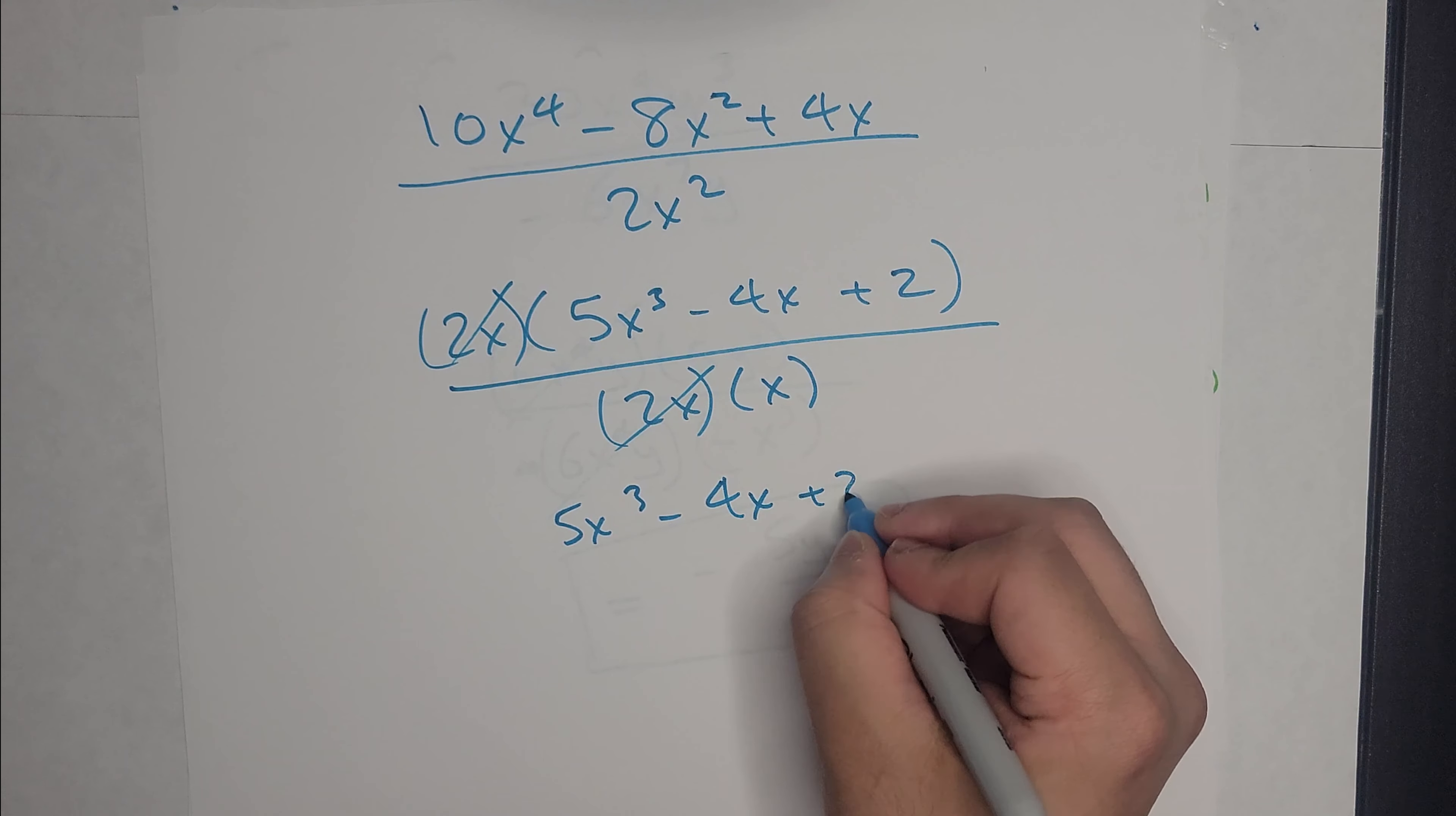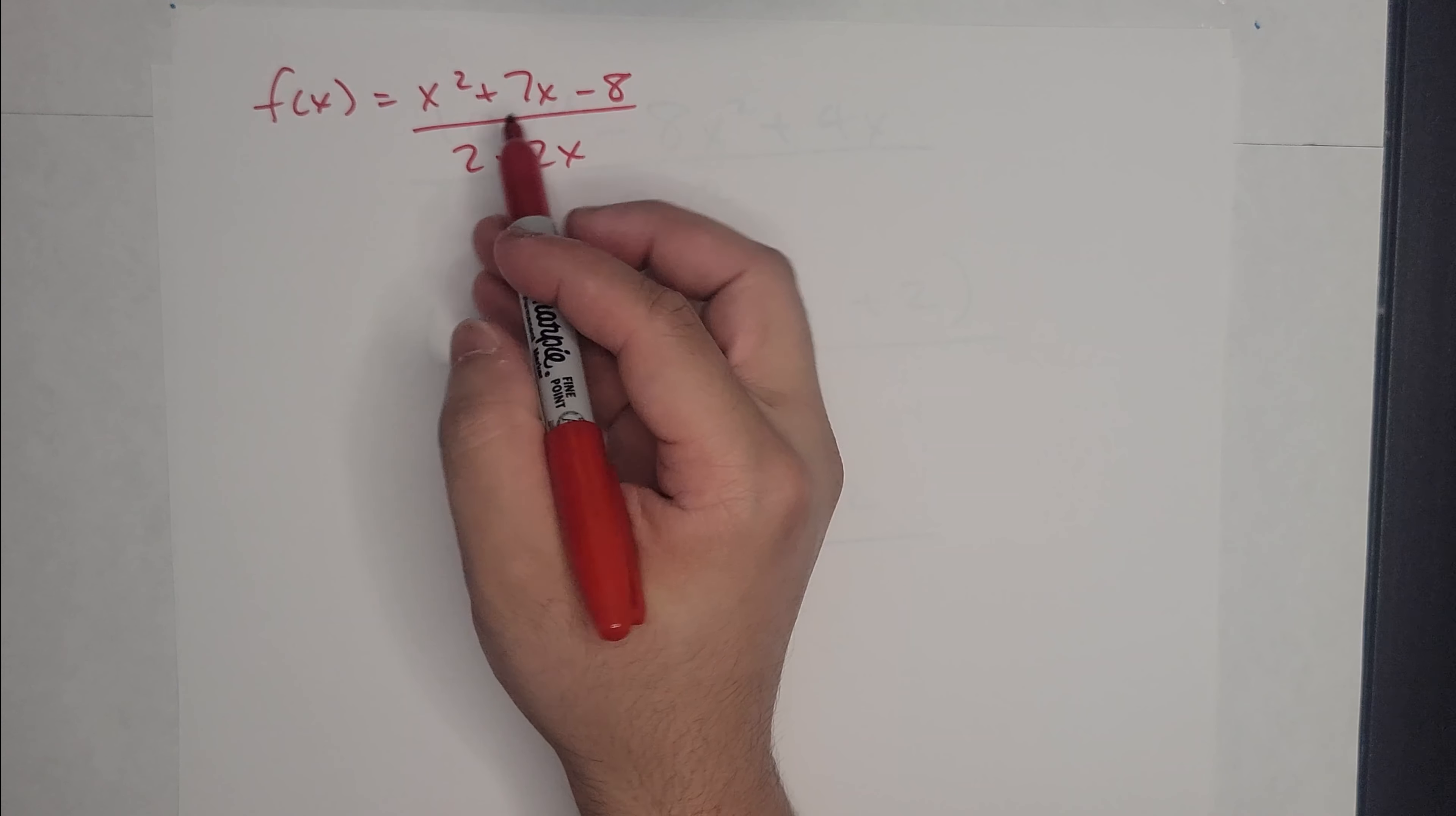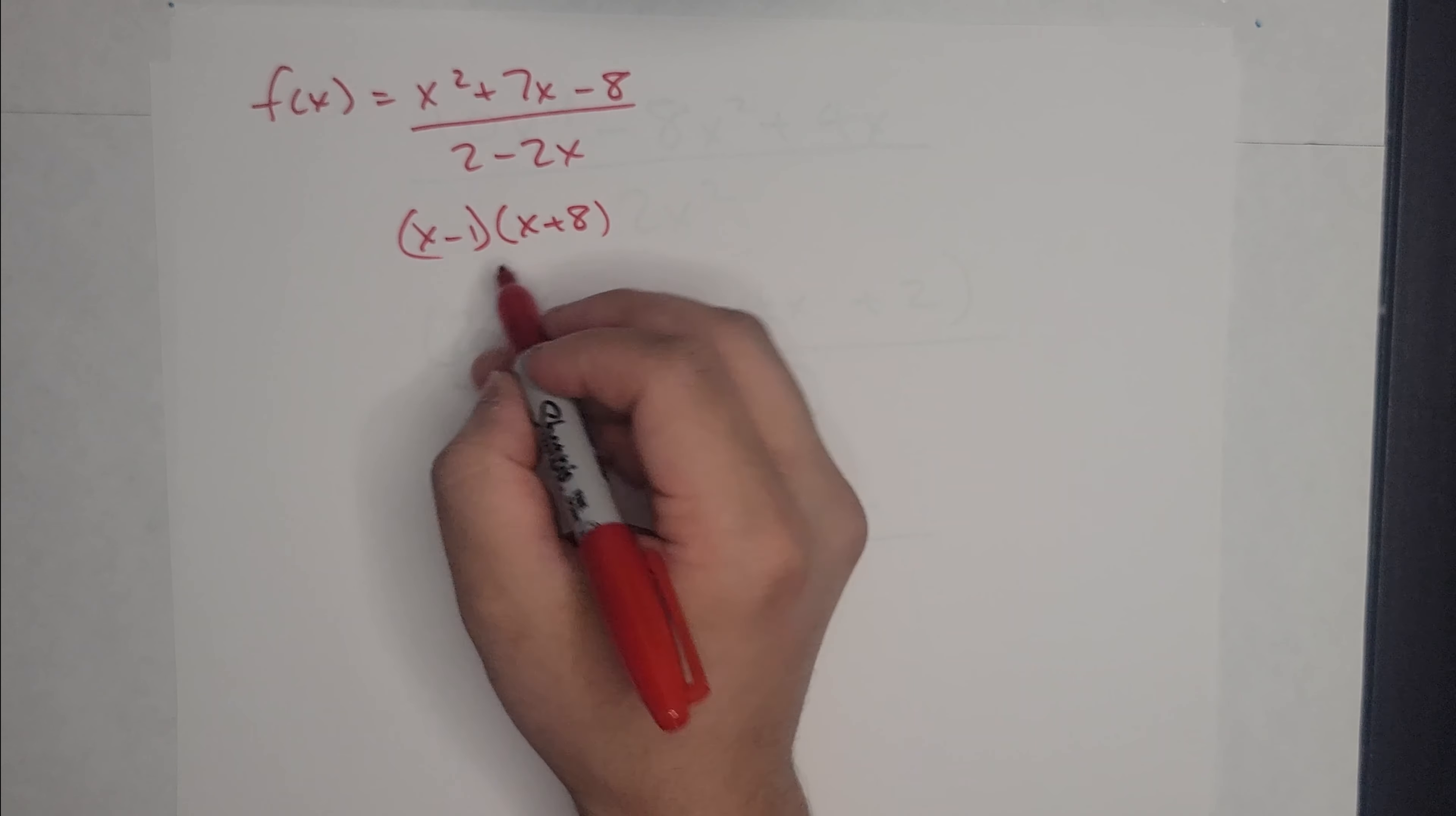Let's look at another one. Let's do red. Let's do this one: (x² + 7x - 8)/(2 - 2x). So from the numerator, I can break this down into two numbers that multiply to -8 but add up to 7. So I have 1 and 8. That's gonna add up to that. So I'll do 8 - 1. So that's x - 1, x + 8.